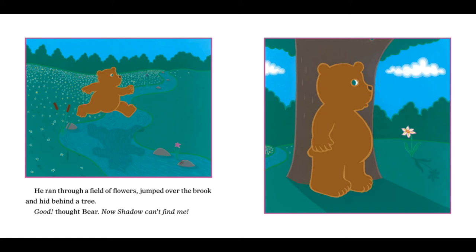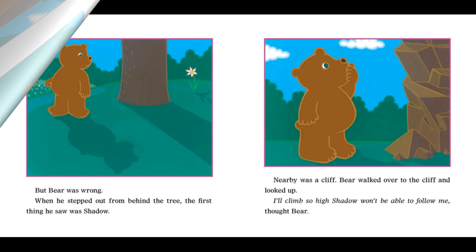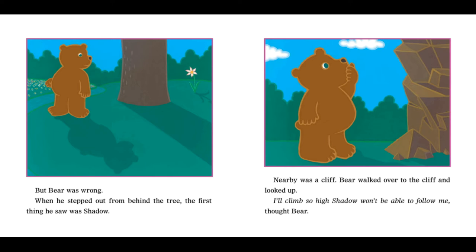He ran through a field of flowers, jumped over the brook, and hid behind a tree. Good, thought Bear. Now Shadow can't find me. But Bear was wrong. When he stepped out from behind the tree, the first thing he saw was Shadow.